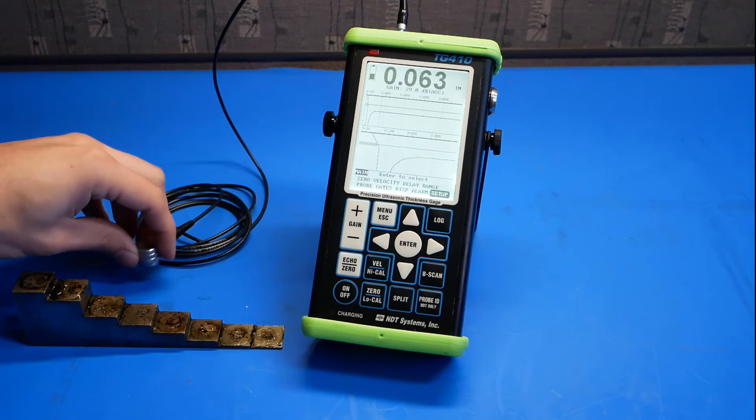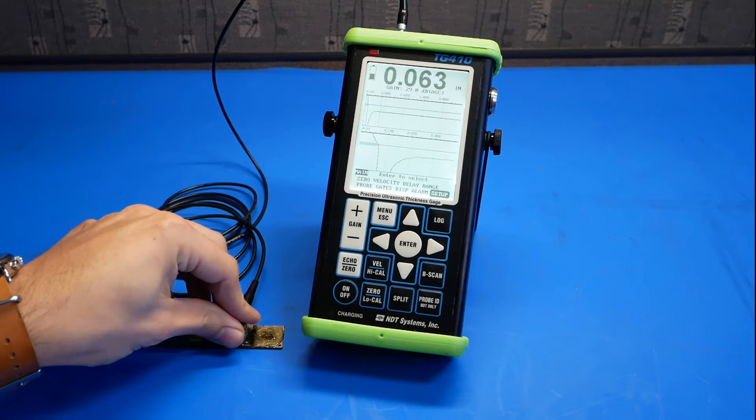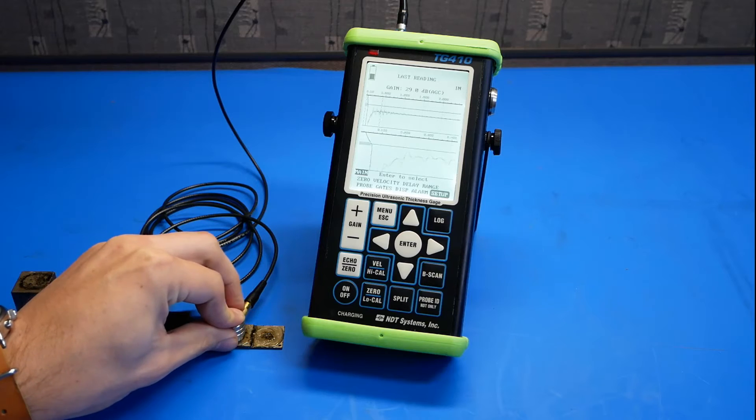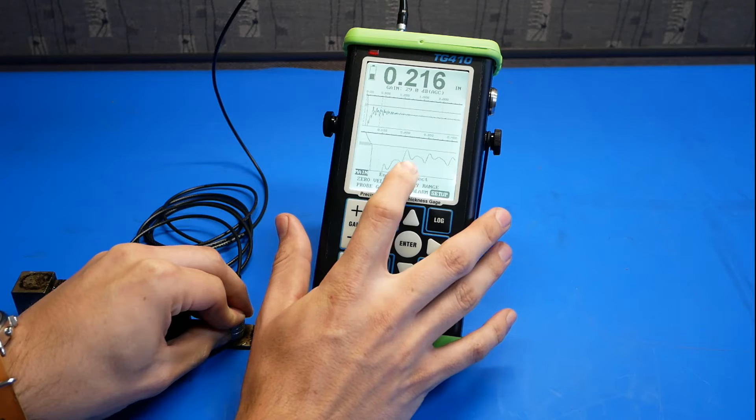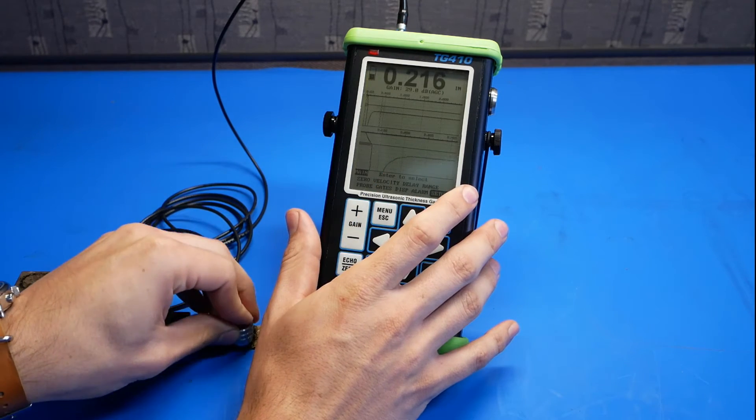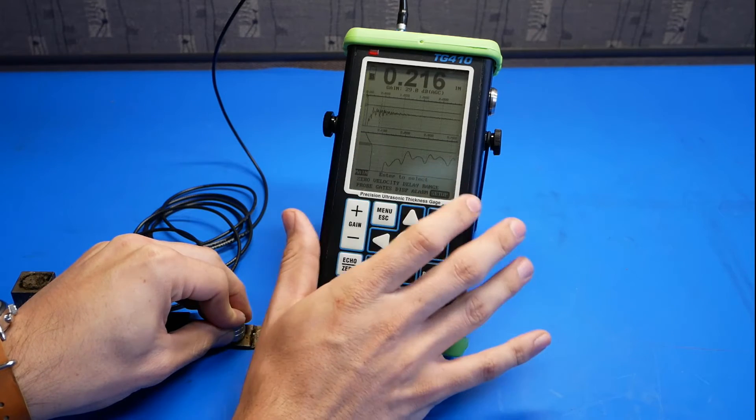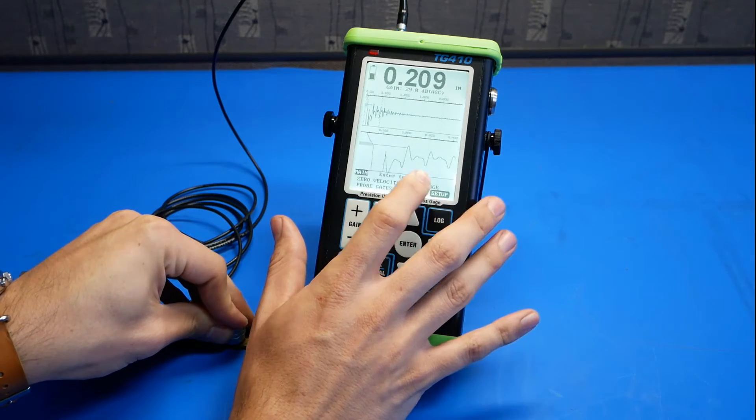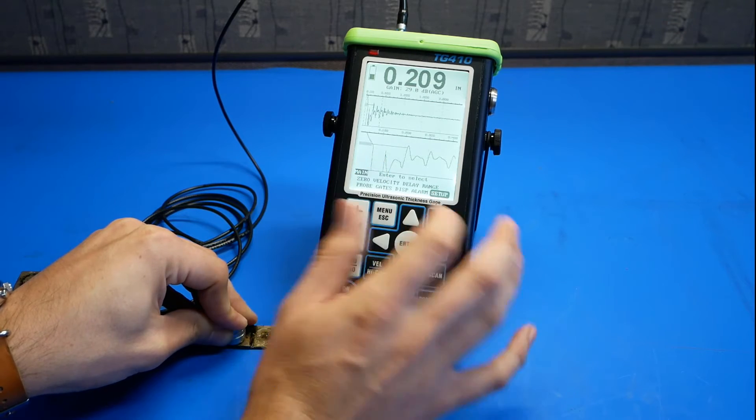Next, we'll go ahead and couple the probe to our area of low thickness, still 0.1 inches. And here we can see that the gate is not triggering on the waveform. We can do one of two things. We can either increase the gain or we can lower the threshold. Let's go ahead and lower the threshold and try and capture the gate on this pulse.